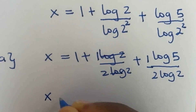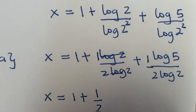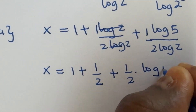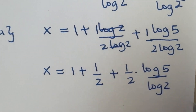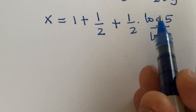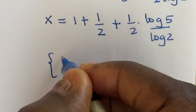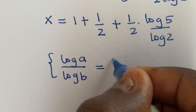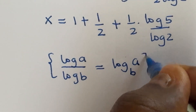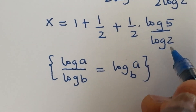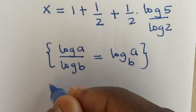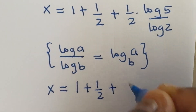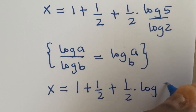I'm going to separate that, so I have x is equal to 1, then plus 1 over 2, then plus 1 over 2 times log 5 divided by log 2. This division is of the form log a over log b, and this is expressed as log a base b. So log 5 divided by log 2 becomes log 5 base 2.